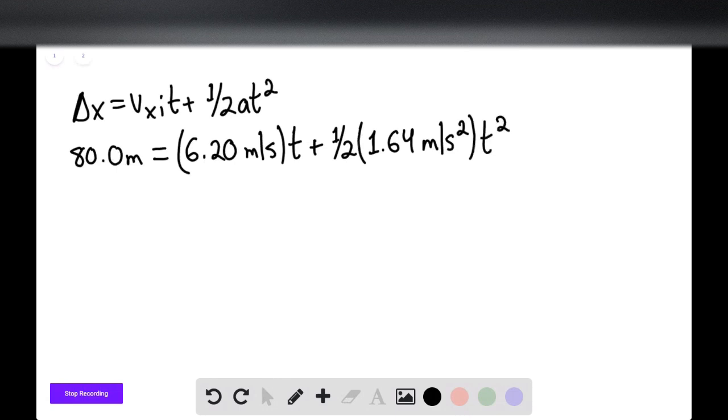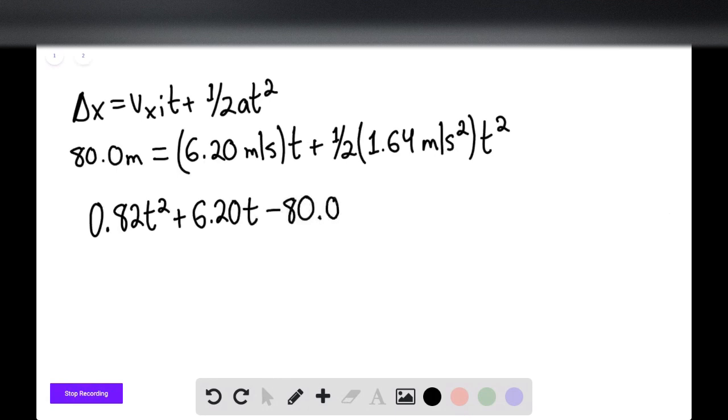We can actually solve. In this case, we're going to say that half of 1.64 would be 0.82. So 0.82t squared plus 6.20t minus 80.0 should equal 0. And as you can see, this is a quadratic equation. So you can use your solve function in your TI-84, 85, or 89 in order to solve this quadratic equation. And t is going to be equal to 6.80 seconds.